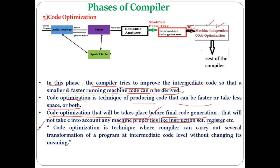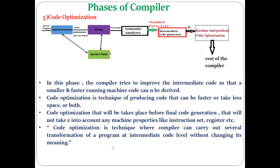The code optimizer will generate optimized intermediate code and give it as input to the next phase — the code generator. Code optimization can be described as a technique where the compiler makes rearrangements in the code without affecting the final meaning of the program, so that the code runs faster and takes less space.